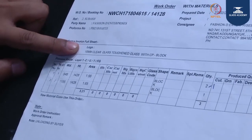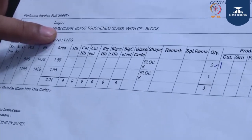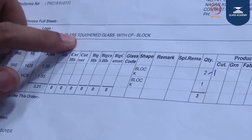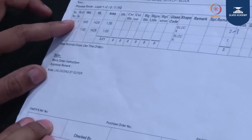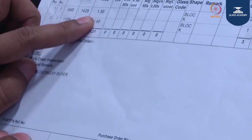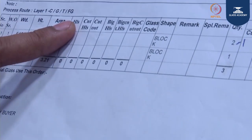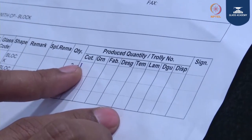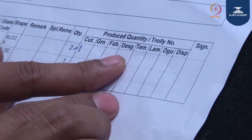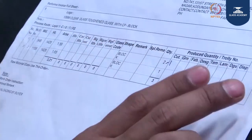The specification of the glass is described in the work order. The thickness is 10 mm, the type is clear glass, the process is toughening, and the type of edge grinding is CP. It is a rectangular glass. The width, height, and area in square meters are given. If the glass has holes or cutouts, they will be mentioned here. The quantity is 2. The process flow includes cutting, tightening, fabrication, design, tempering, lamination, DPU, and discharge.